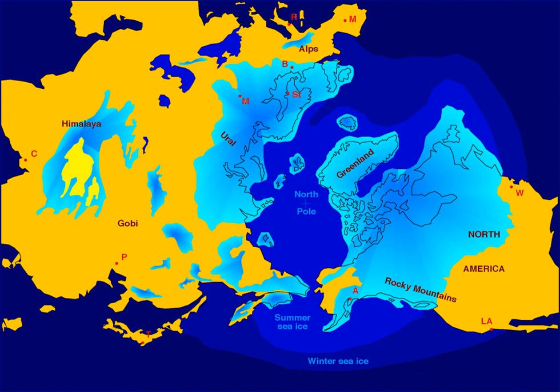During the Quaternary Glaciation, ice sheets appeared. During glacial periods they expanded, and during interglacial periods they contracted. Since the end of the last glacial period, the only surviving ice sheets are the Antarctic and Greenland ice sheets.